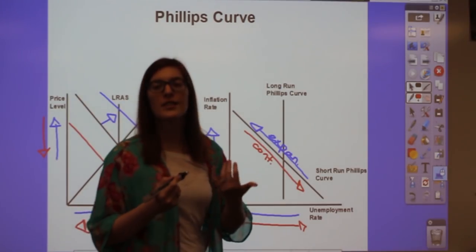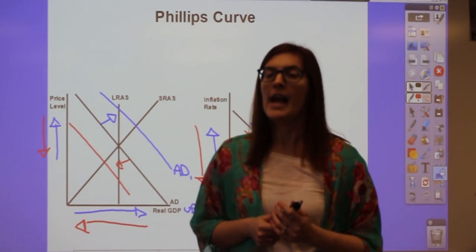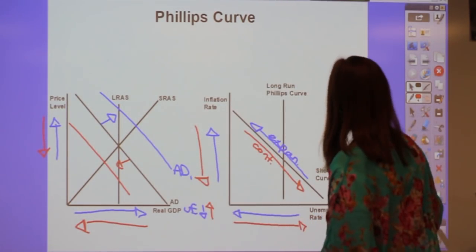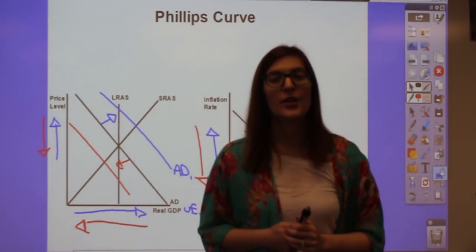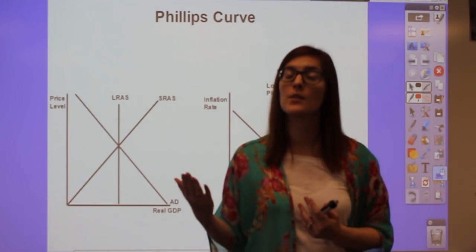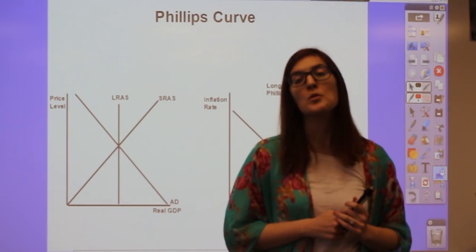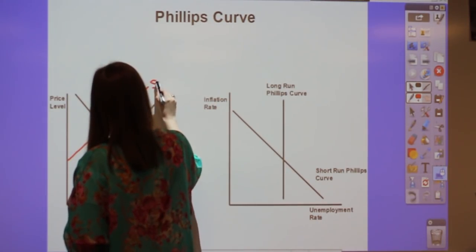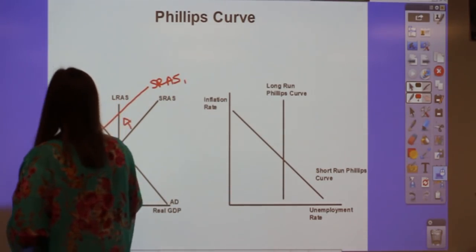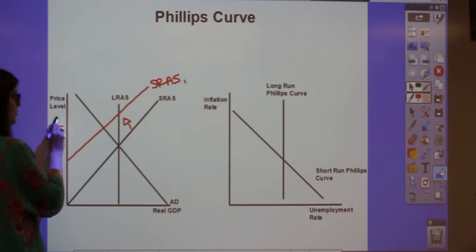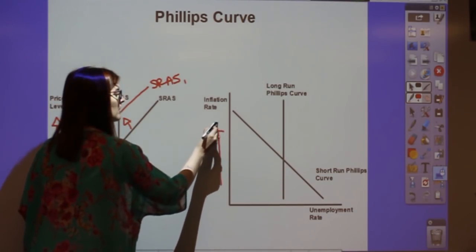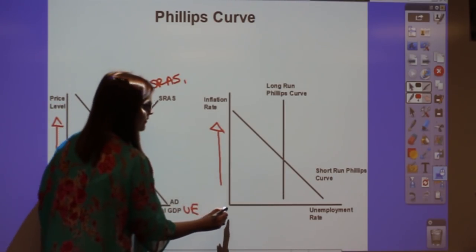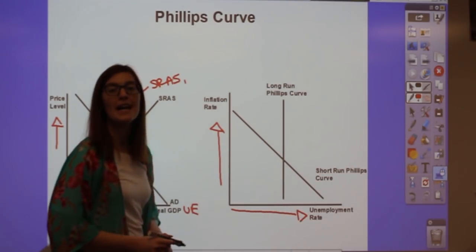This was the Phillips curve model until the late 1970s, when stagflation required modifying it to include short run aggregate supply shifts. When stagflation occurred, the business cycle was disproved because suddenly we had inflation and unemployment at the same time—illustrated by a decrease in short run aggregate supply. When OPEC cut off oil, resource costs increased, decreasing short run aggregate supply, which drove price levels up—causing inflation—and drove GDP down, pushing unemployment up.